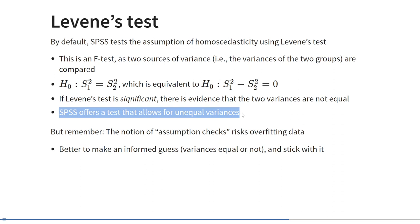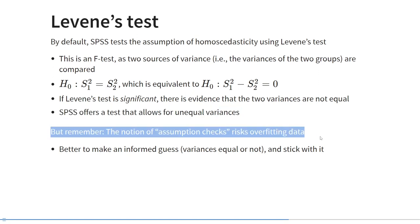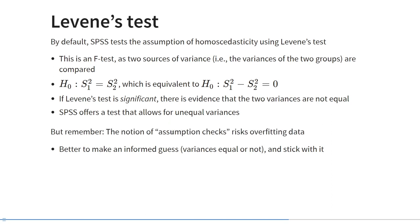SPSS offers a test robust to unequal variances, usable when homoscedasticity is violated. But think carefully before switching to a robust test. We can never know for sure if assumptions are true or false in the population — we can only test for evidence of violations in our sample. If we blindly adjust our analyses to apparent violations, we risk overfitting the data. It's better to make an informed guess about whether variances in the two groups are equal, stick with that guess, and if you find evidence of a violation, report and discuss it in your paper.